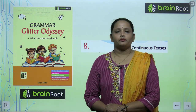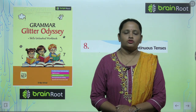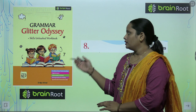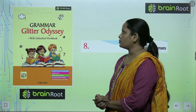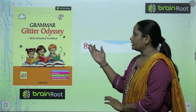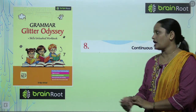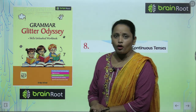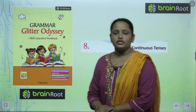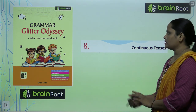Hello my dear kids, welcome back to the Brain Root series by Amit Publishing House Children. I am Vandana and we are learning grammar book 7. The name of your book is Grammar Glitter Odyssey and today we are going to start with chapter number 8. The name of the chapter is Continuous Tense.